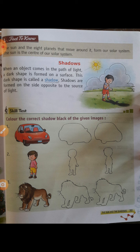When an object comes in the path of light, a dark shape is formed on a surface. A dark colored shape is formed on a surface.